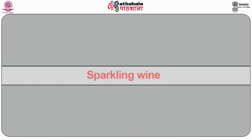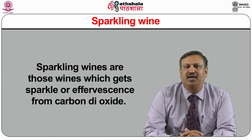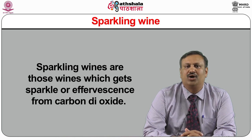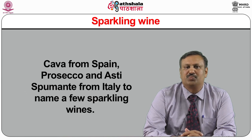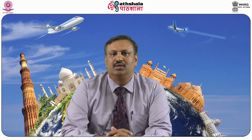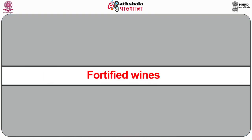Sparkling wines are those wines which get sparkle or effervescence from carbon dioxide. Cava from Spain, Prosecco and Asti Spumante from Italy are examples of sparkling wines. The term Champagne is reserved for sparkling wines made in the Champagne region of France, whereas other countries producing similar wines are known simply as sparkling wines.